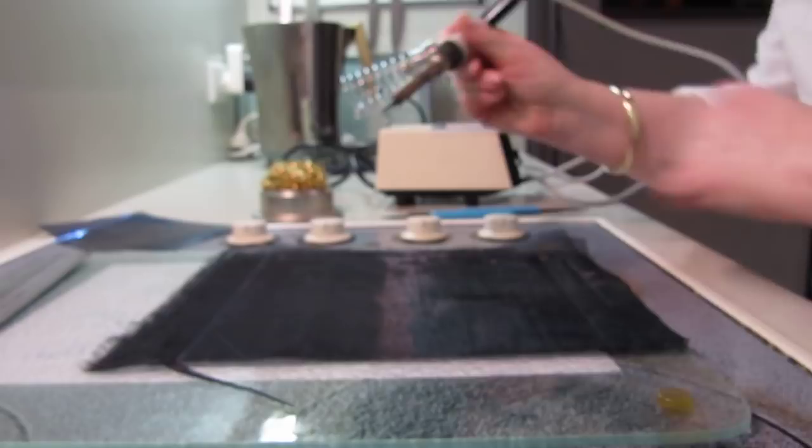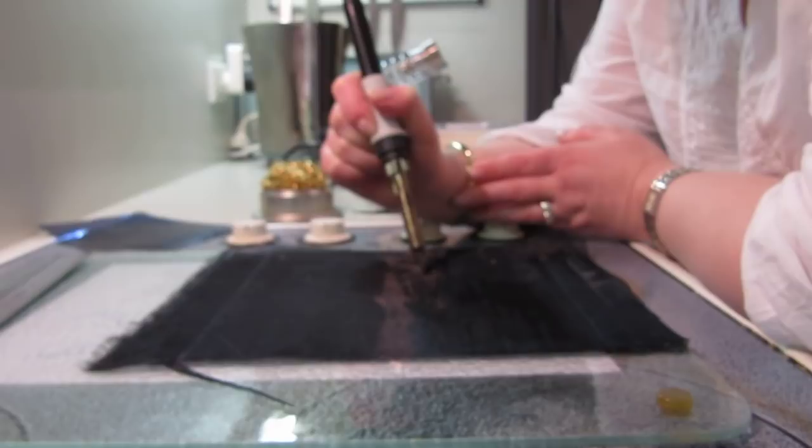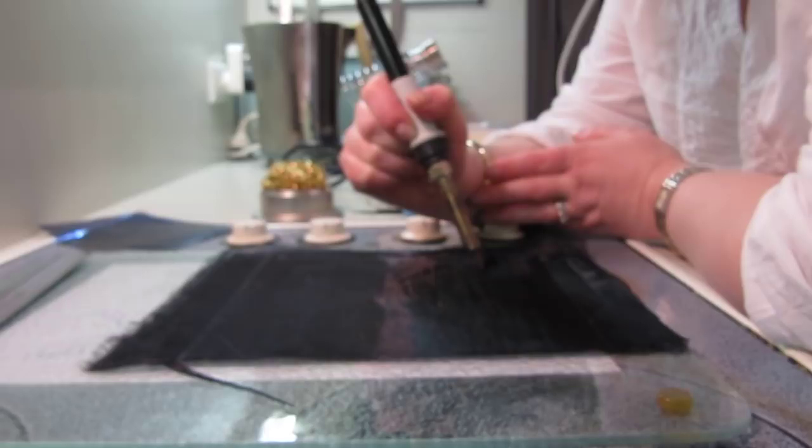So we're just going to come through. Now you want to work slowly enough that you have control. And you are working on glass which is quite slippery. But you don't want to work so slow that at the heat you've got your soldering iron on you'll burn a hole.